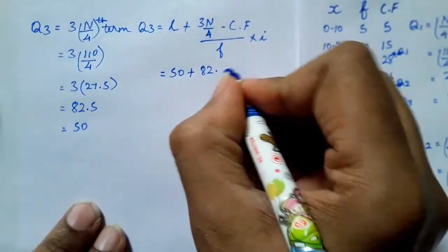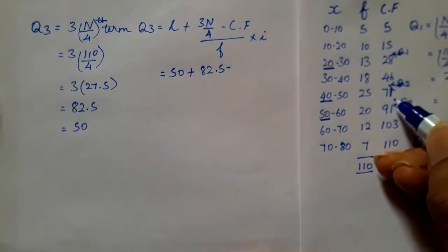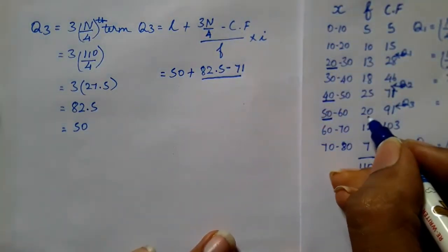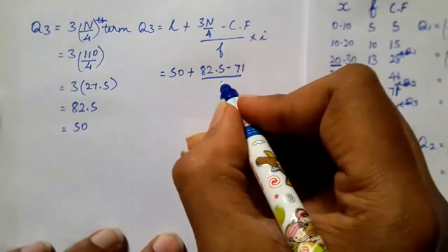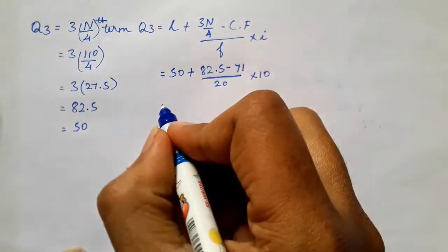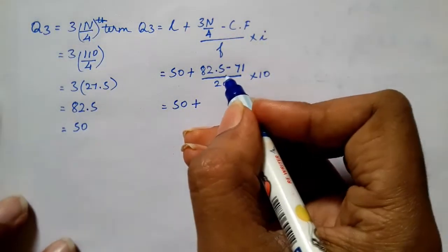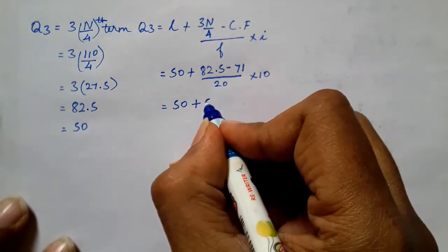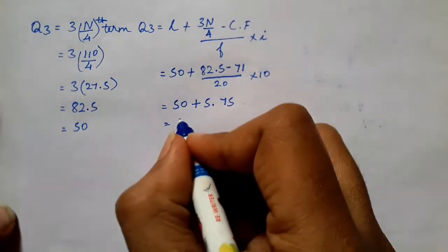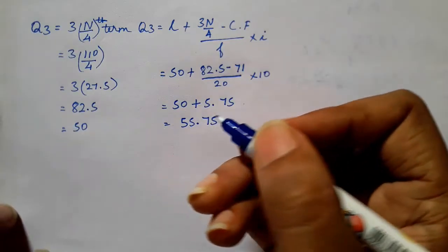Now we have the frequency in this row, so 20 into i value 10 difference. Now we calculate 50 plus 82.5 minus 71 divided by 20 into 10, so we calculate 5.75. So we calculate 55.75, this is q3.